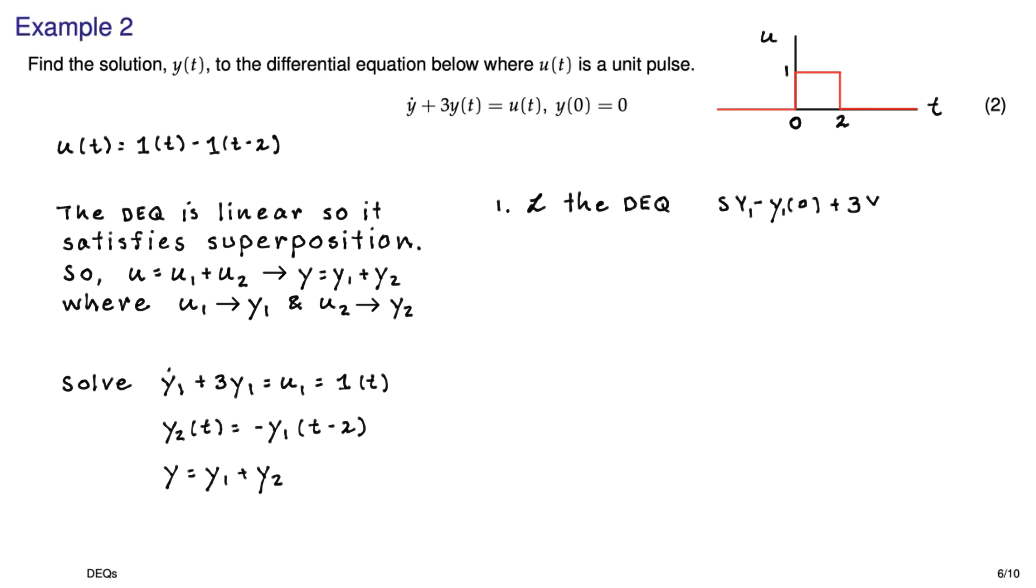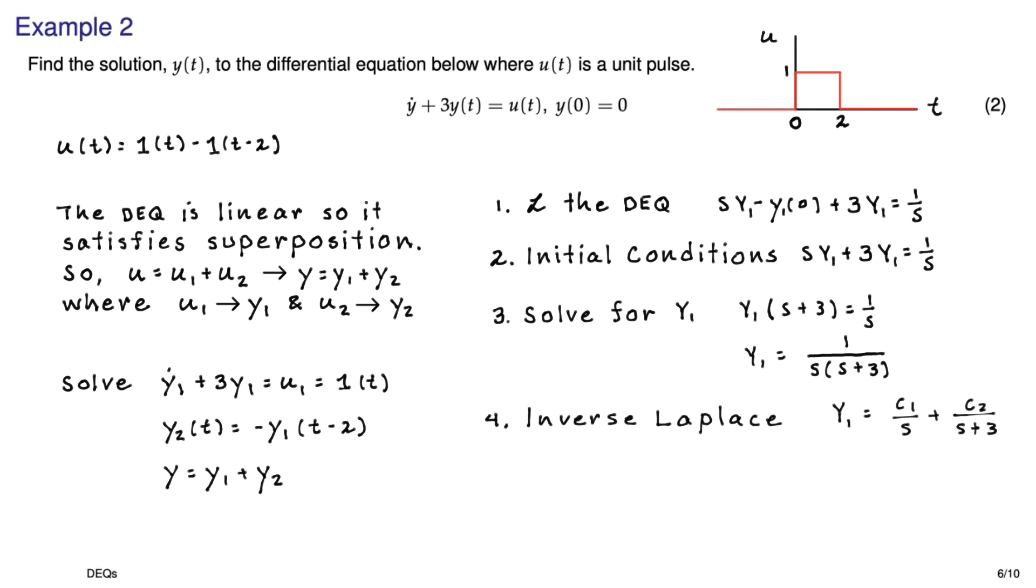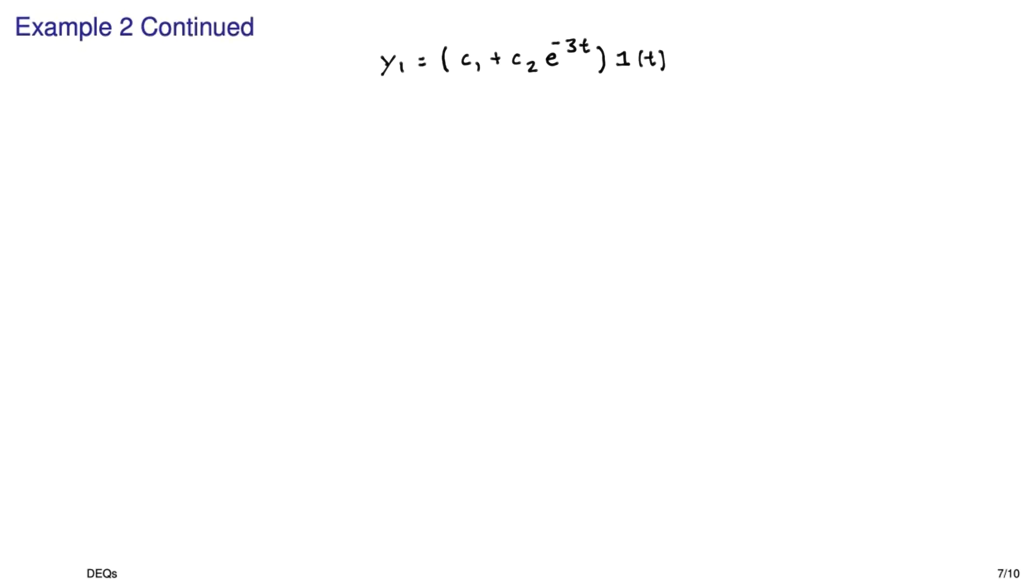So we go through our process again, take the Laplace transform of both sides of the y1 dot equation, substitute in the initial conditions, which are pretty easy in this case, just 0, and then solve for the capital Y1. And we get this. Now that Laplace transform is actually in most tables, but we'll go ahead and do the inverse Laplace transform using the cover-up method and partial fraction expansion. There's what the solution looks like with some unknown coefficients, c1 and c2. There it is again, just because I ran out of room on the previous page. And now we can use our superposition and combine that with its counterpart that's delayed in time by 2 seconds. And there's the answer. I just have to find the actual numbers for c1 and c2 if I'm interested in that.